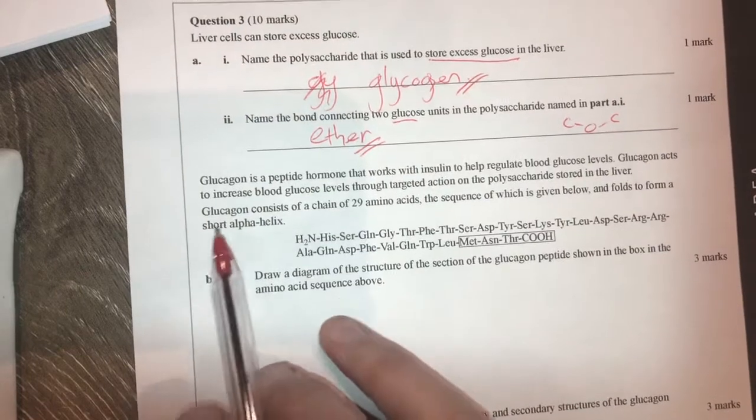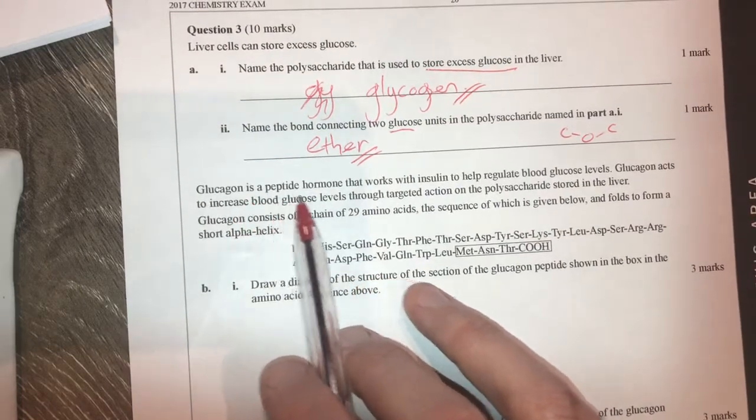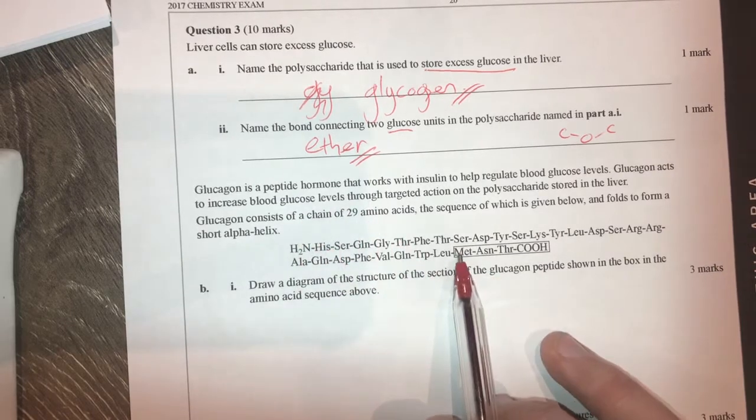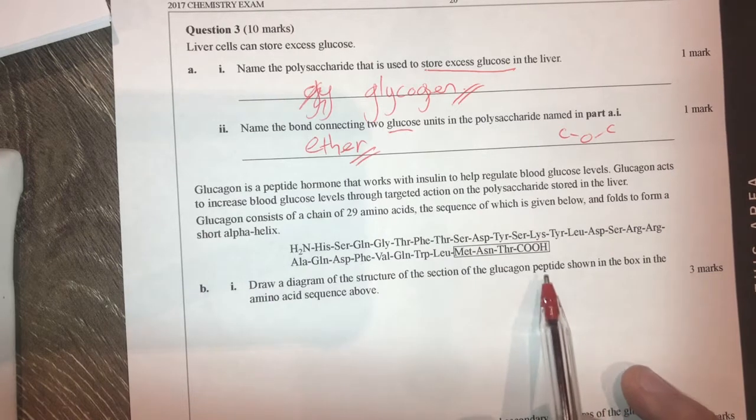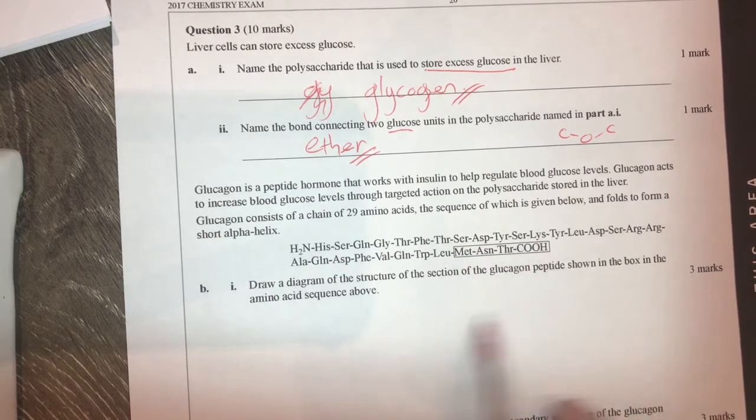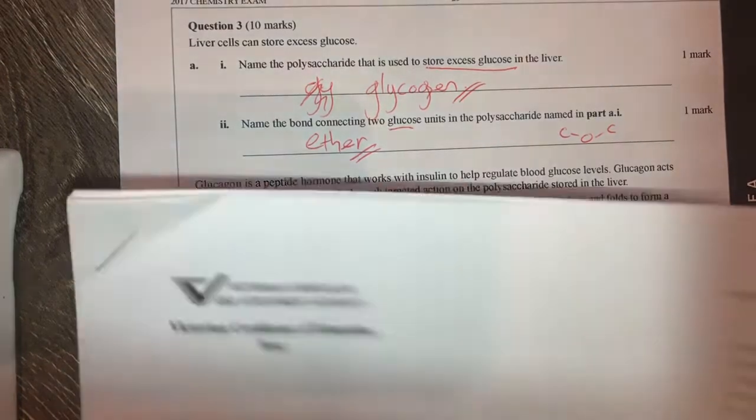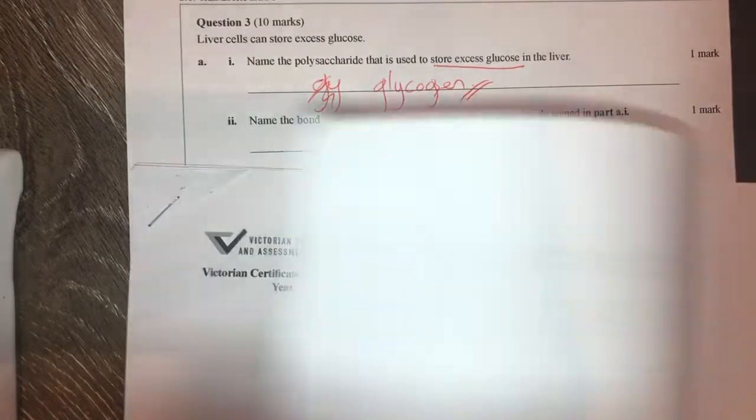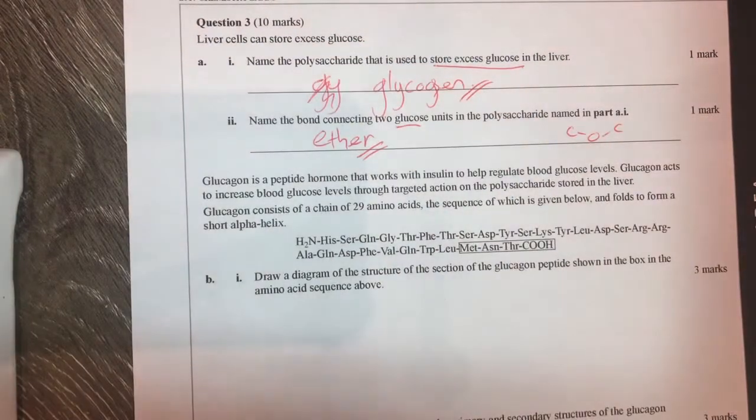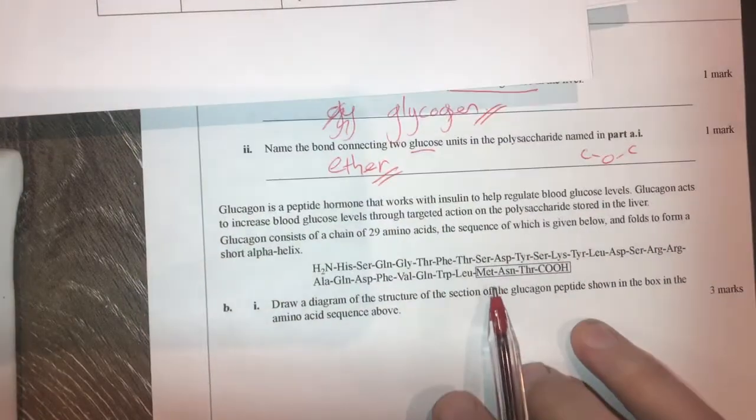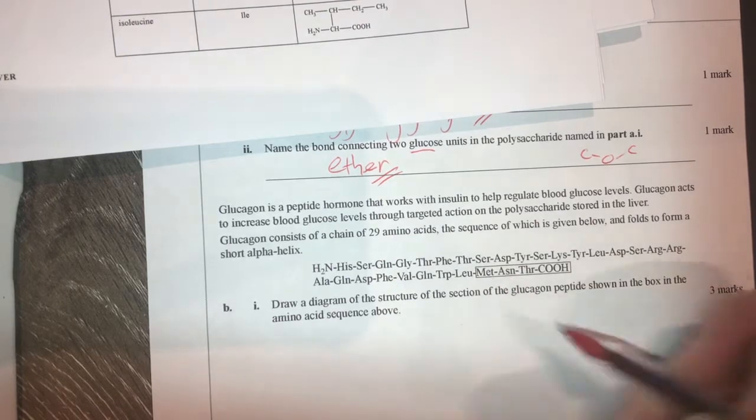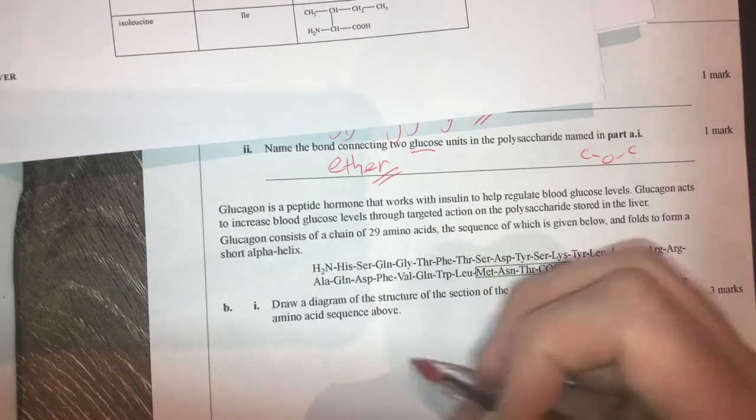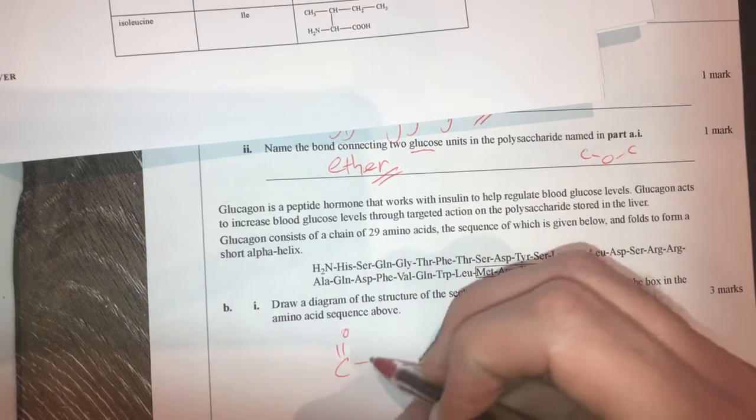Next up, we've got glucagon here, which is a peptide hormone. Draw a diagram of the structure of the section of glucagon peptide shown here, so I need to draw this in the box. So what that means is I need to get my handy data sheet out, flick over to the back side, and I need to start looking for these amino acids. Now, I've got two peptide linkages, so I'm going to first of all start off with those, which is going to be a peptide, which looks like this.